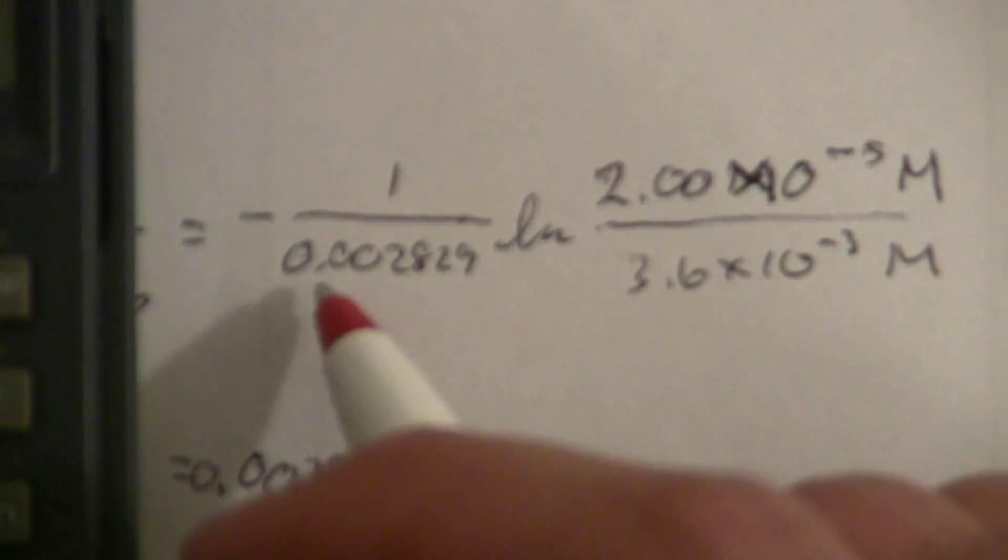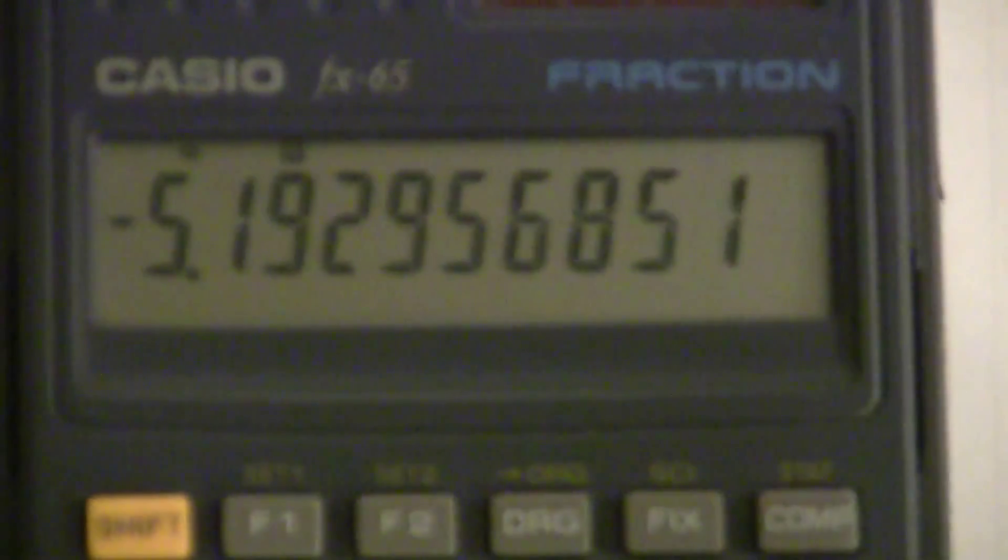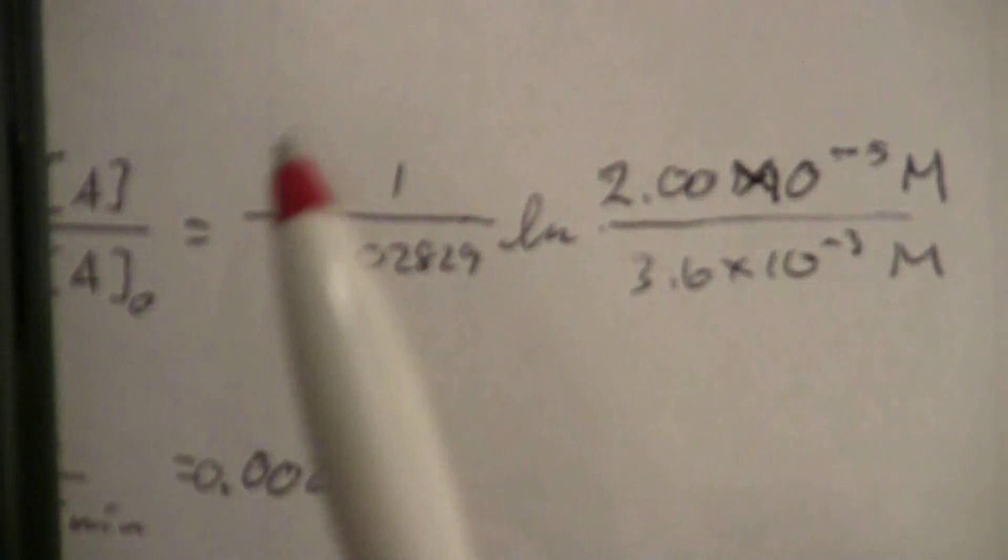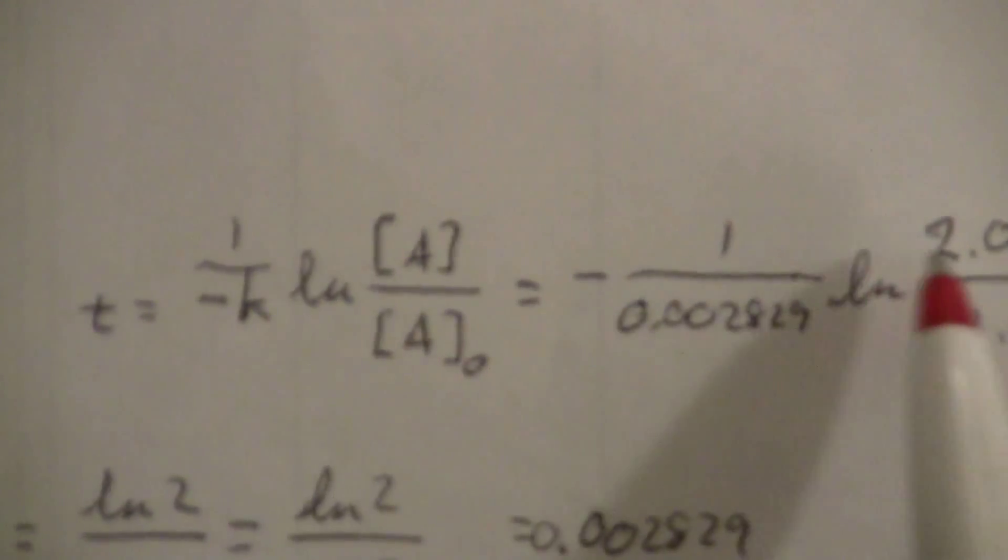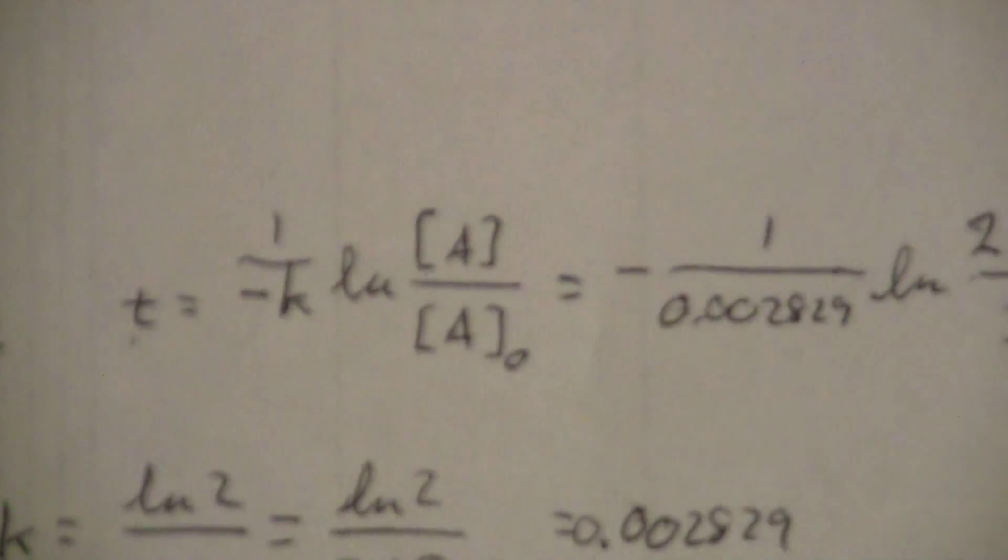Okay, that's this part, and then I'm going to divide that by a negative 0.0, and you'll notice it's a negative here, so that cancels that out, which is good, because time can't be negative.